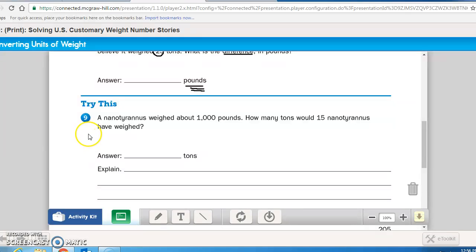Number nine says, a nanotyrannus weighed about 1,000 pounds. How many tons would 15 nanotyrannuses have weighed? So again, you're taking 15 times the 1,000 pounds, and then you've got to convert that into tons. Show your math down here on the lines so that I can see that you understood what to do. Pause the recording now. Finish page 205. When you have checked it back in the answer key, if you've gotten any wrong, please bring it to me so that I can show you what you did wrong, and then turn the recording back on for the next instruction.